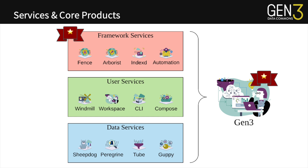Many of you on this webinar may already be familiar with Gen3, but I wanted to introduce our core product offerings. Gen3 is an open source solution that the team at the University of Chicago at the Center for Translational Data Sciences maintains. Gen3 supports an authentication and authorization service called Fence, a policy engine called Arborist, a data indexing solution called IndexD, as well as a suite of automation tools for setting up these services on the Kubernetes cluster and being able to diagnose issues with services.